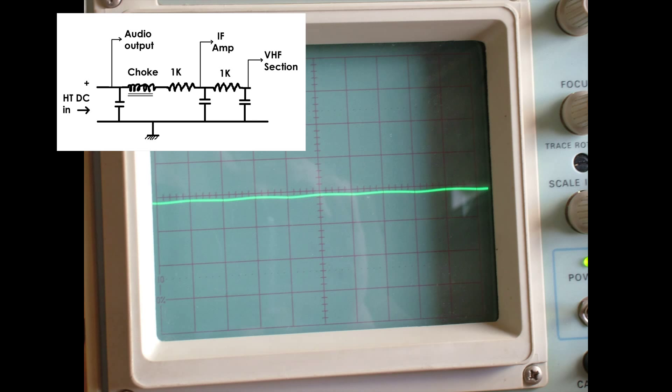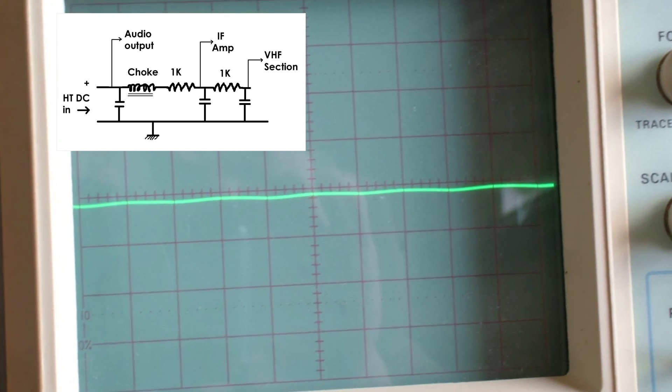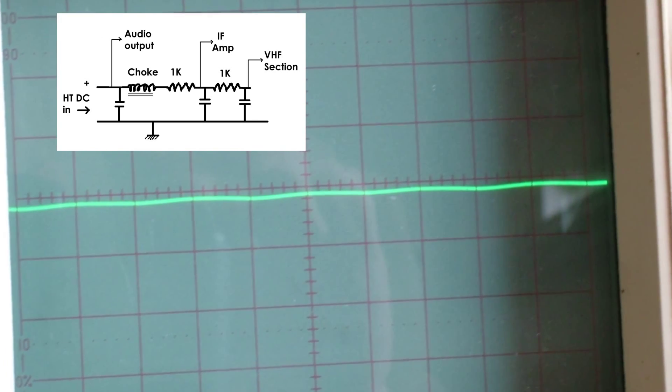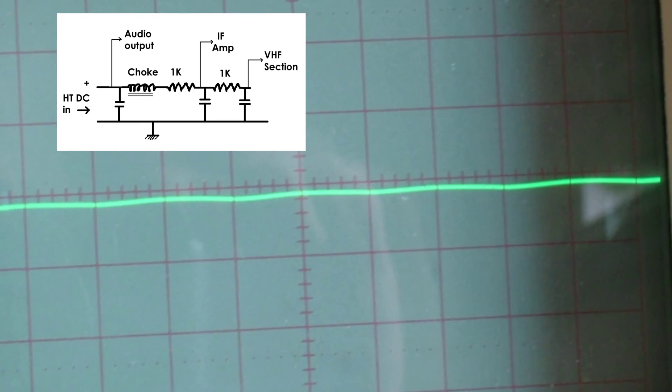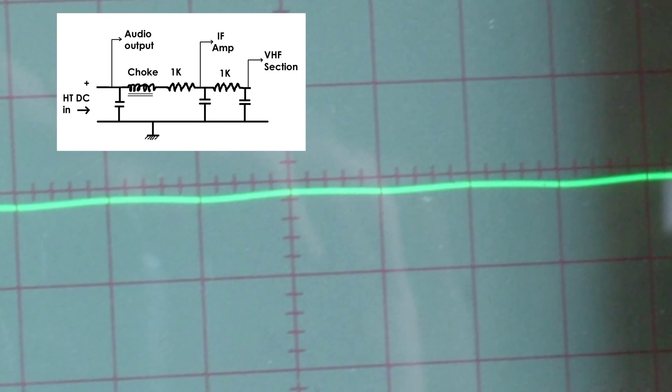And this final image shows the ripple that is on the voltage supply to the VHF section. So very little ripple on there. So hopefully that shows clearly that there are the three distinct levels of filtering or smoothing.